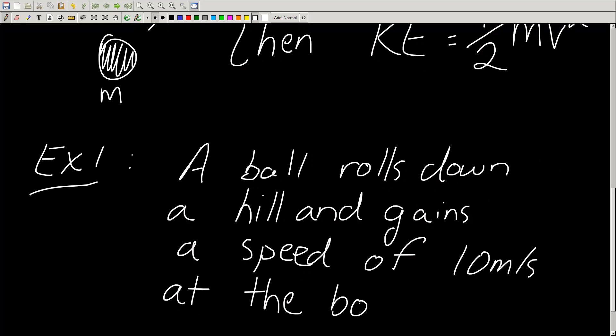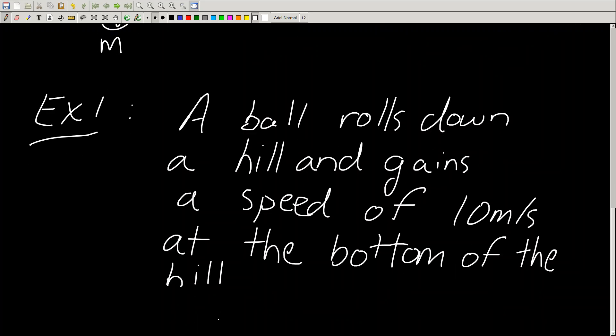So it reaches the bottom of the hill, and after all that falling down the hill, it gains a speed of 10 meters per second. And let's say the ball's mass is 10 kilograms. With that being said, it's a 10 kilogram ball, speed of 10 meters per second. What is its kinetic energy?